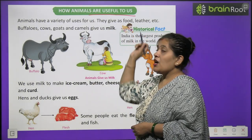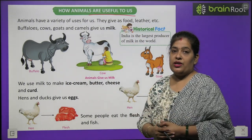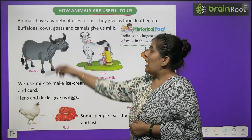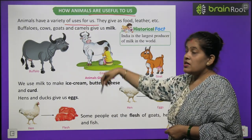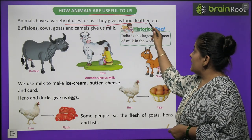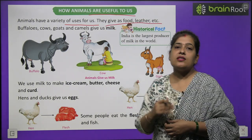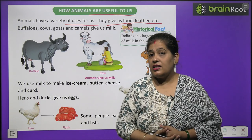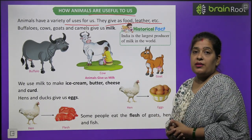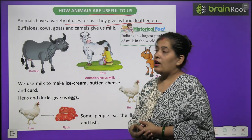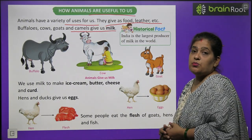How are animals useful to us? Janvar hamare liye kaisi upyogi hai? Animals have a variety of uses for us. They give us food, leather, etc. Janvar hame bohot sari chizein dete hai, jaise bhojan aur leather, chamra. Buffalo, cow, goat and camels give us milk. Gain, bhai, bakri aur oonth hame milk dete hai.